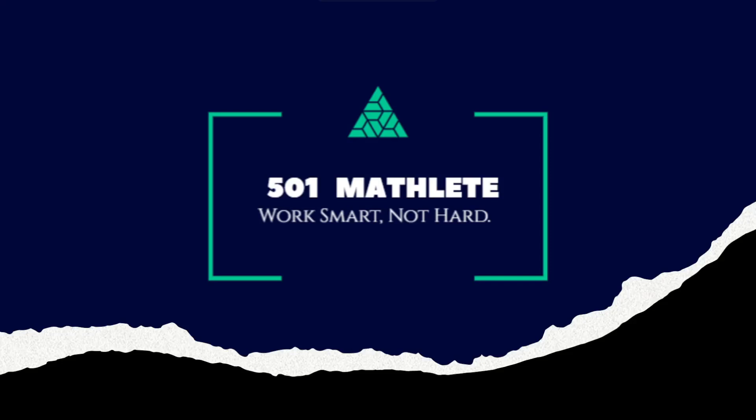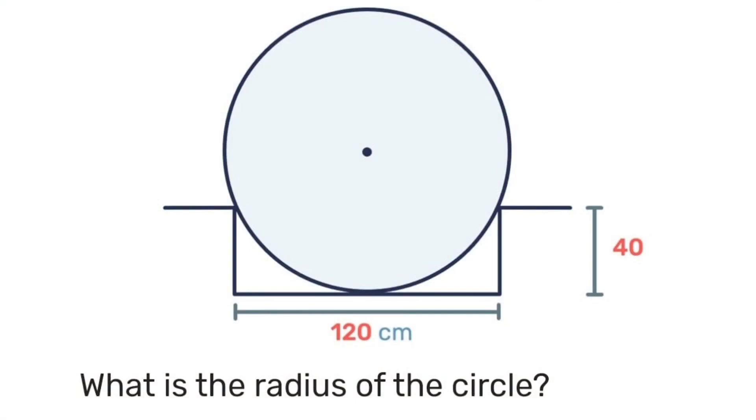Good day and welcome to 501 Math Lee where we work smart not hard. In today's problem we're given this diagram of a circle that is fit inside of a rectangular shape where we know that the length of that rectangular shape is 120 centimeters and its height is 40 centimeters. With that we're to determine the radius of the circle.